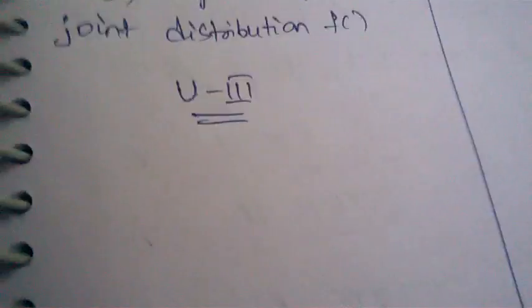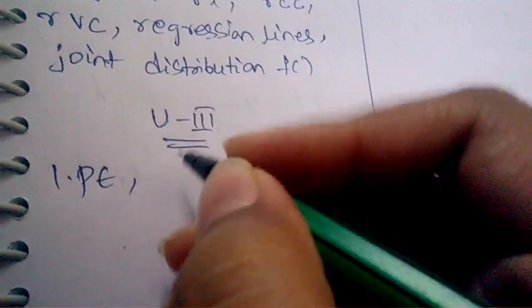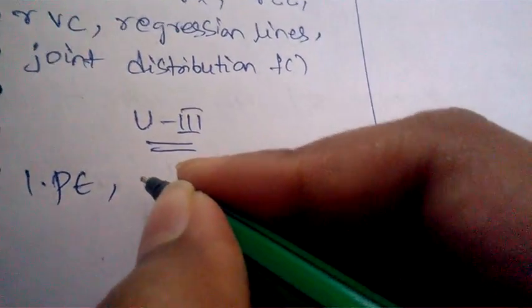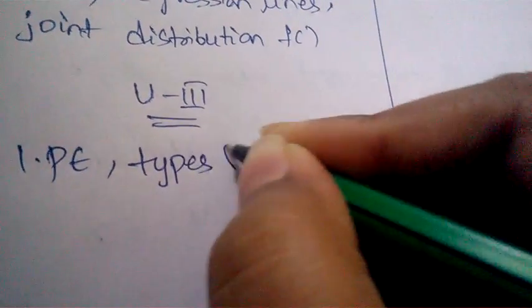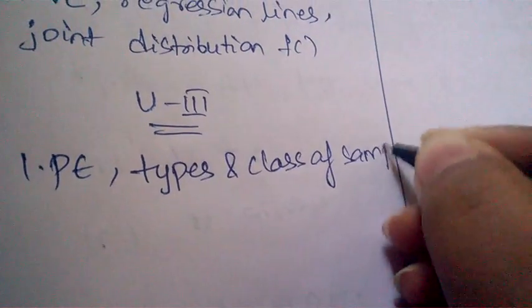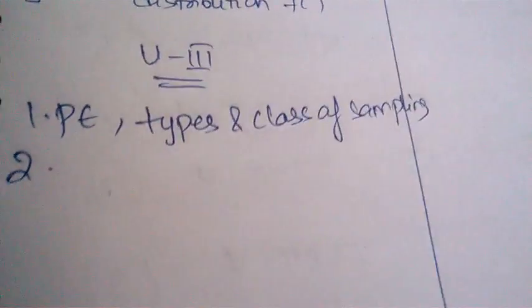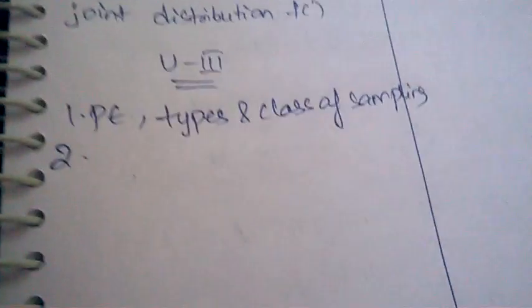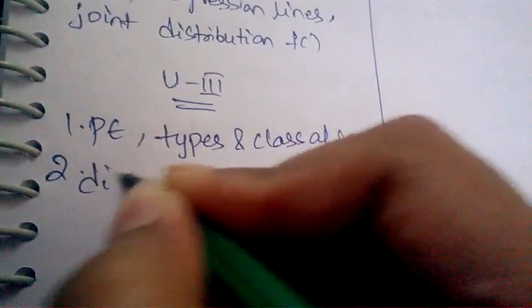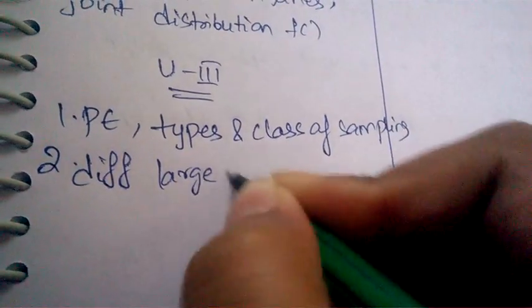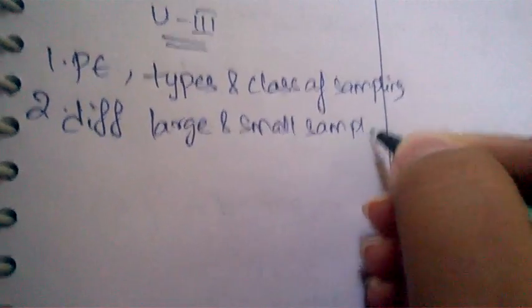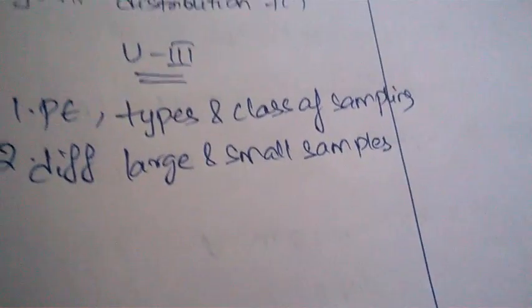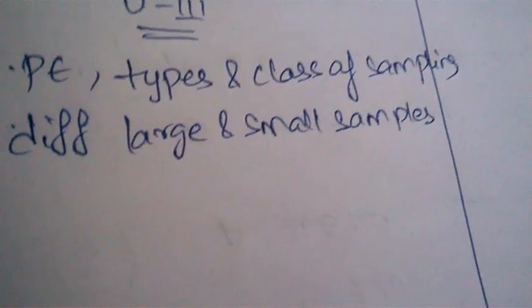Coming to unit 3, the important questions are: what is point estimation — explain. Different types of sampling, types and classifications of sampling. What are large samples and small samples, and differentiate them. What is point estimation — that is also an important question.